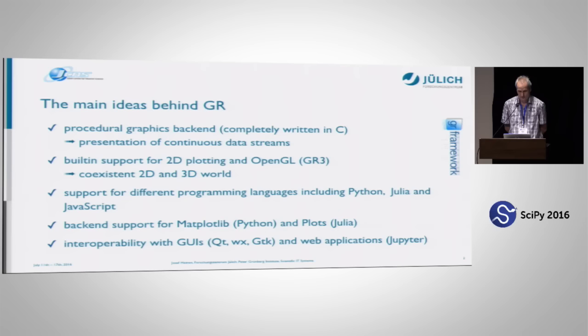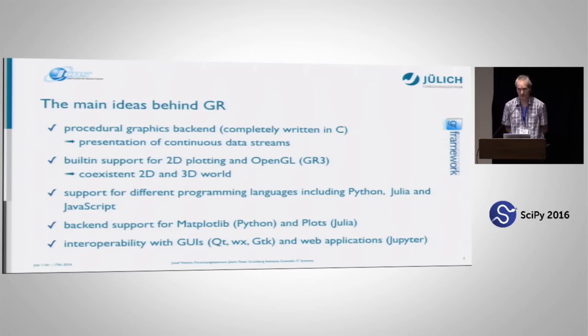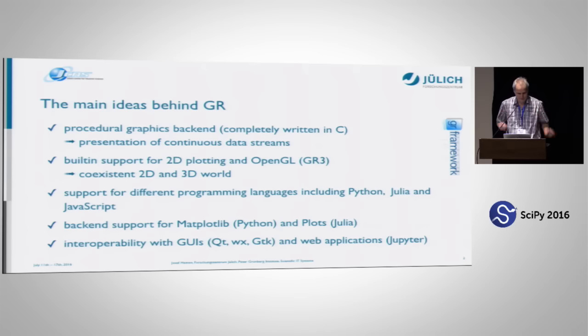We cannot only visualize static data, but also dynamic data sets. It has built-in support both for two-dimensional and three-dimensional graphics, and you really use the same graphics container to visualize both of these two worlds — I think that's also unique to the GR framework. There's support for different programming languages, also those popular in the data science world like Python, Julia, and even JavaScript. We also support Fortran, but I don't want to enter the danger zone here.